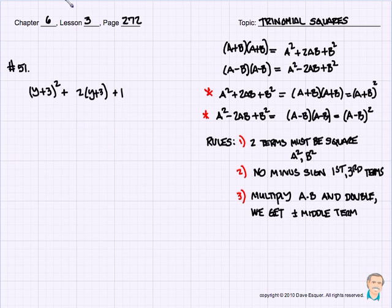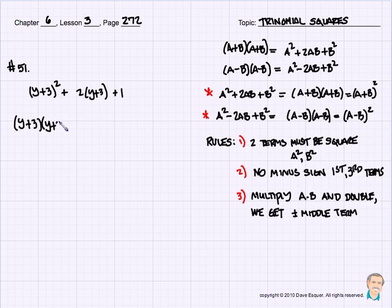This takes a little practice, but you'll get the hang of it. Let's try number 51: the quantity of y plus 3 squared, plus 2 times the quantity of y plus 3, plus 1. Let's write this out: (y+3)(y+3) plus 2(y+3) plus 1.